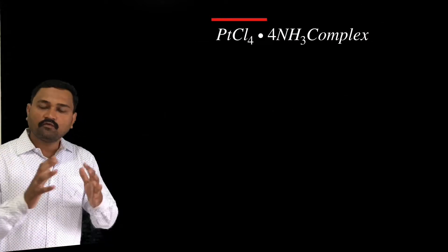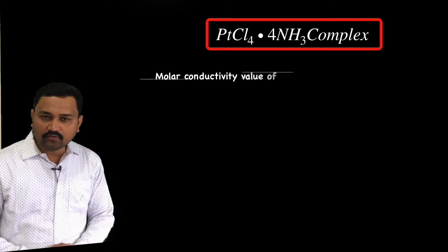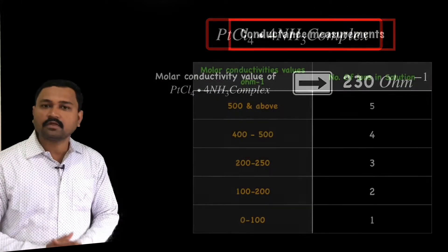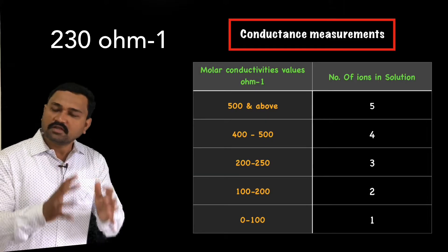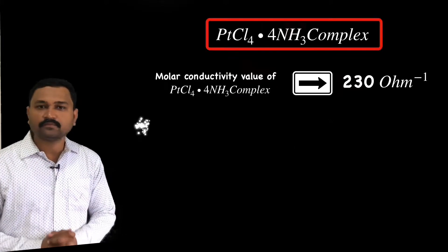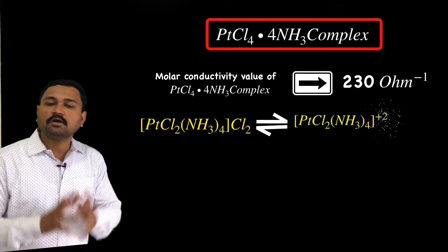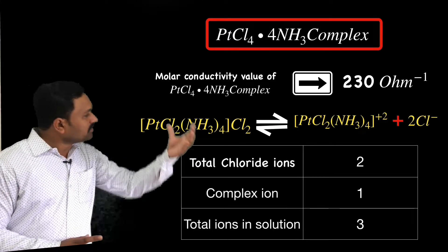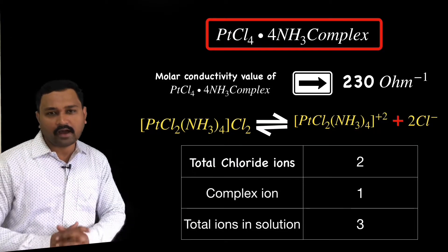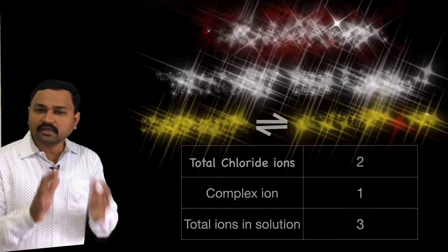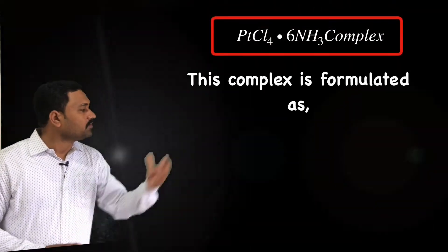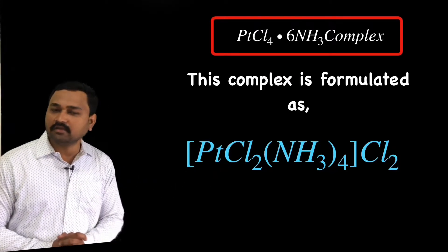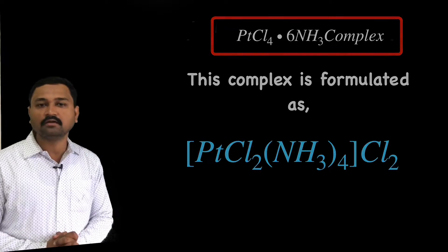For the third complex PtCl₄·4NH₃, the molar conductivity is found to be 230 Ω⁻¹, indicating the presence of three ions in solution. The ionization shows two chloride ions and one complex ion, giving a total of three ions. Hence this complex is formulated as [Pt(NH₃)₄Cl₂]Cl₂.